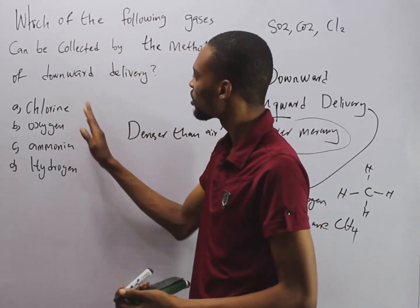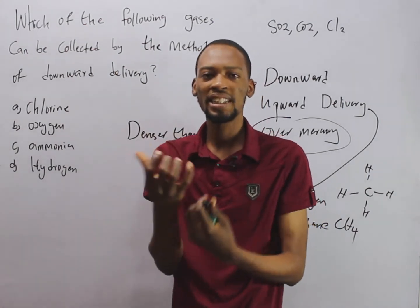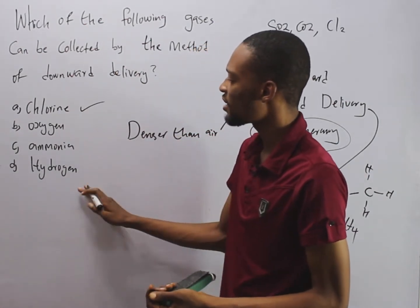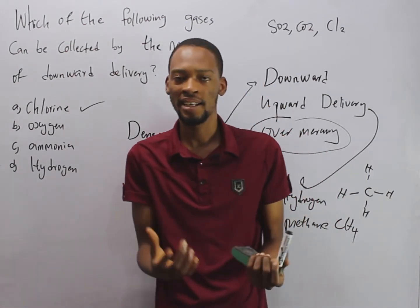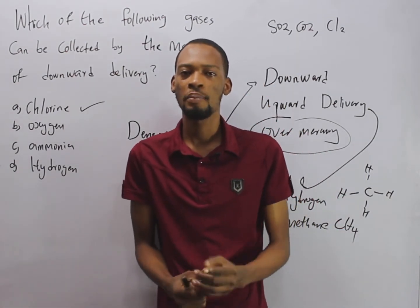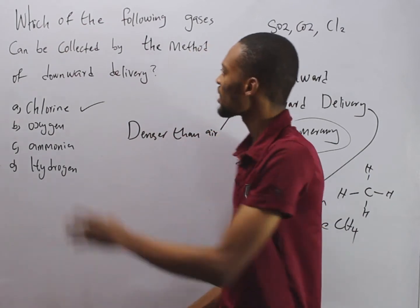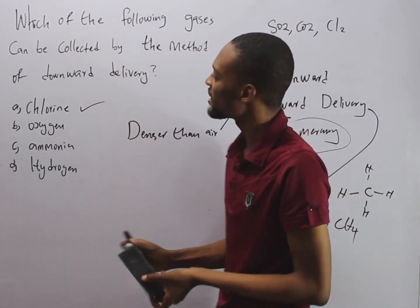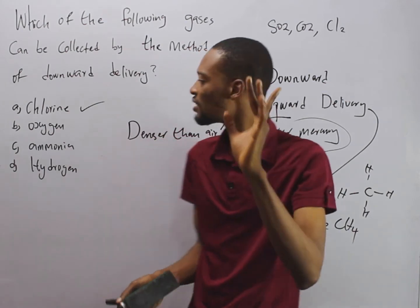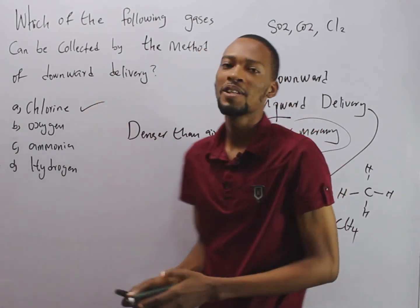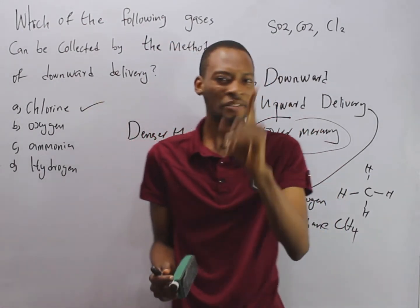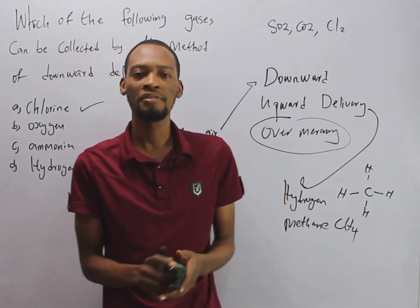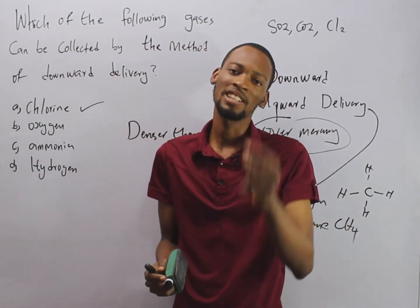So oxygen is collected over mercury. Chlorine is denser than air and is collected by downward delivery, while ammonia and hydrogen are less dense than air and are collected by upward delivery. Answering this question — which of the following gases can be collected by downward delivery — the answer is simply chlorine. Thanks for watching, don't forget to subscribe and feel free to check out my other videos.